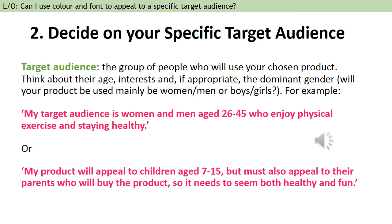You need to know what the target audience of your product is so that you can use the right language and the right colours. Products for men in skincare tend to be navy blue, often with accents of bright orange. Women's products have a whole range of colours. If you're aiming at teenage boys or teenage girls, the colours will be different again. So you might say: my target audience is women and men aged 26 to 45 who enjoy physical exercise and staying healthy — that would be something like a Fitbit or a smartwatch.